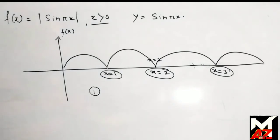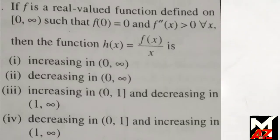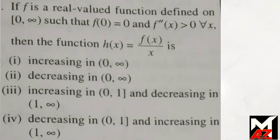Now go to the second question. If f is a real-valued function defined on [0, ∞) such that f(0) = 0 and f''(x) > 0 for all x, then the function h(x) = f(x)/x is: Option 1, increasing on (0, ∞); Option 2, decreasing on (0, ∞); Option 3, increasing on (0, 1] and decreasing on (1, ∞); Option 4, decreasing on (0,1) and increasing on (1, ∞).